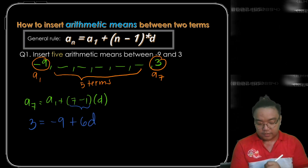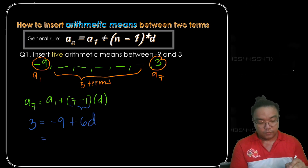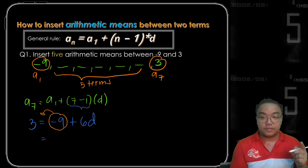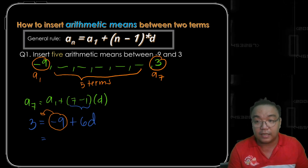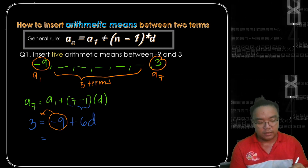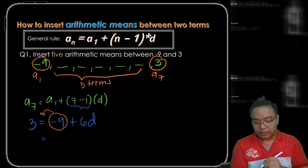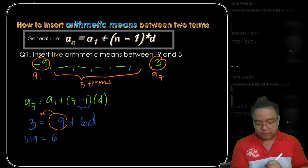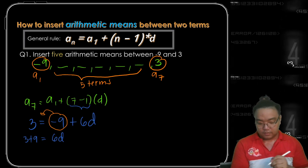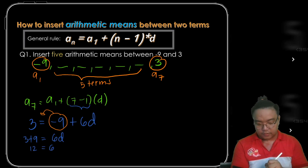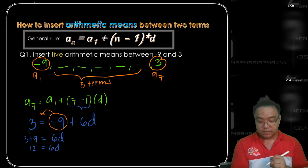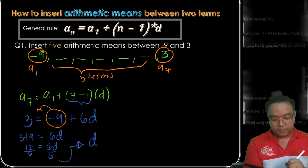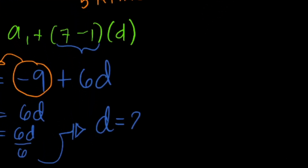Isolating the common difference, we transpose negative 9 to the left side — mathematically speaking, add 9 to both sides of the equation. We get 3 plus 9 is equal to 6d, so 12 is equal to 6d. Dividing both sides by 6, the common difference is 2.